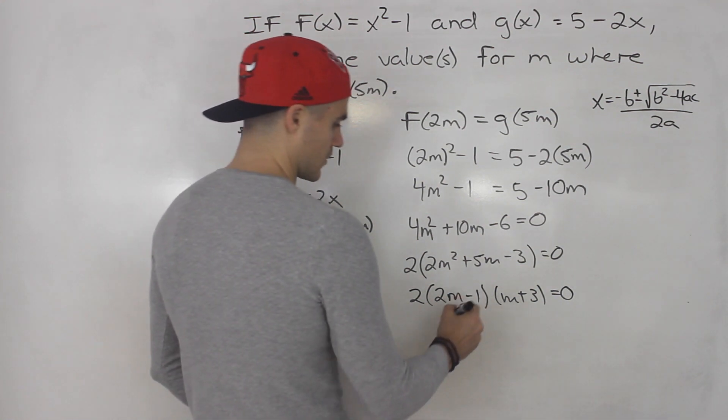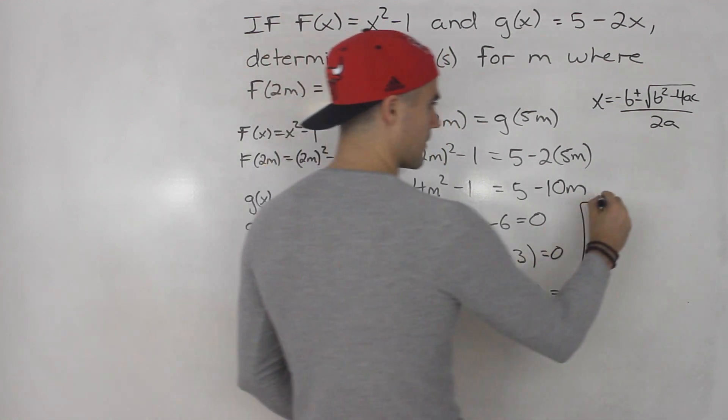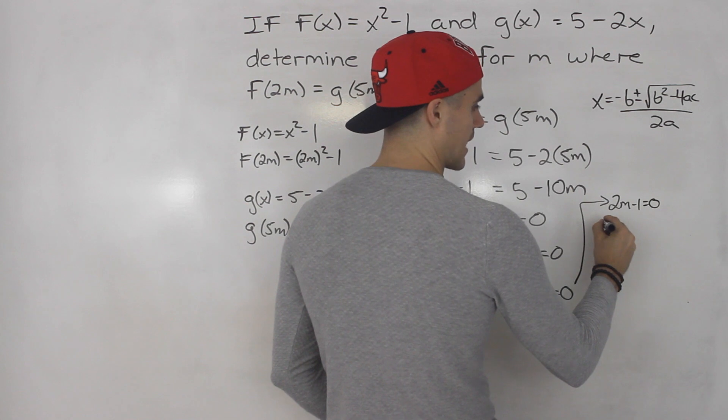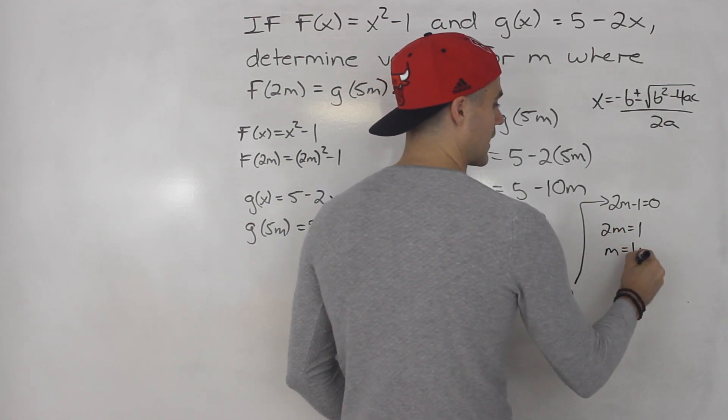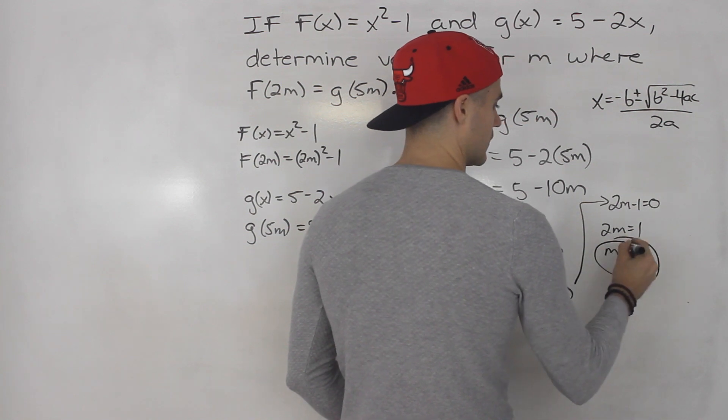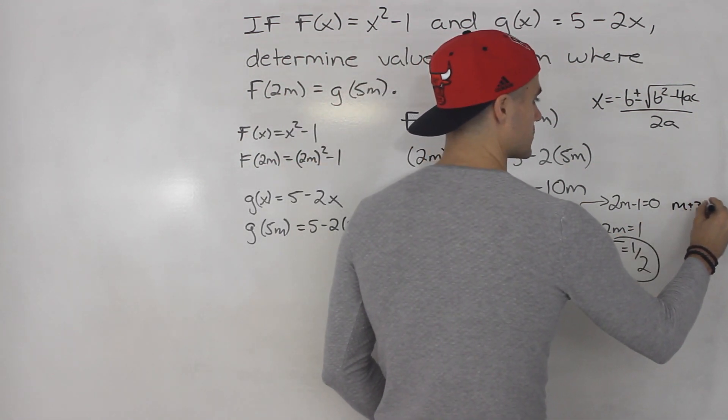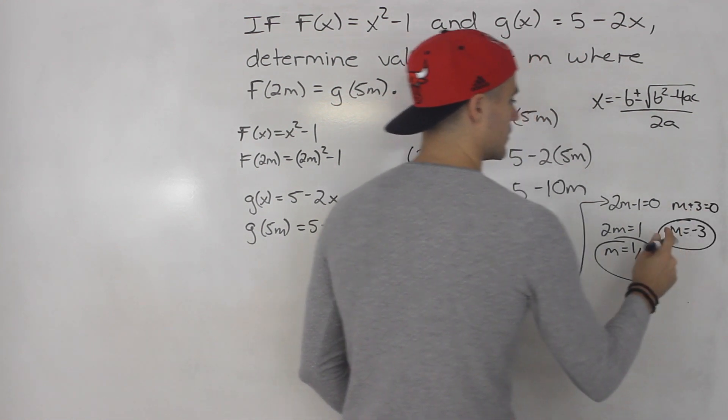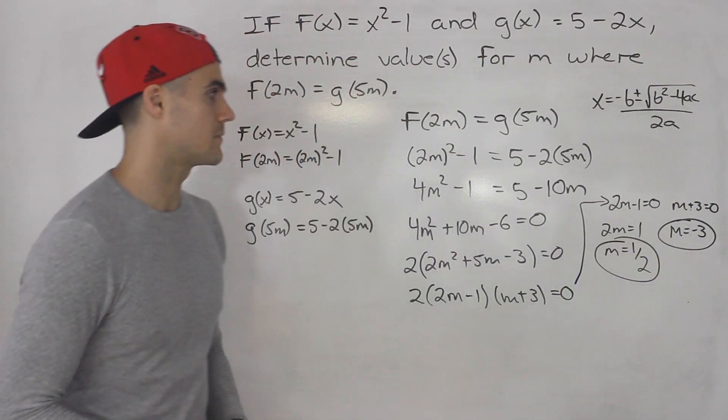From here, we can tell 2m - 1 = 0. That happens when 2m = 1, when m = 1/2. Or m + 3 = 0, which happens when m = -3. So those are your two answers for m: m can be 1/2 or m can be -3.